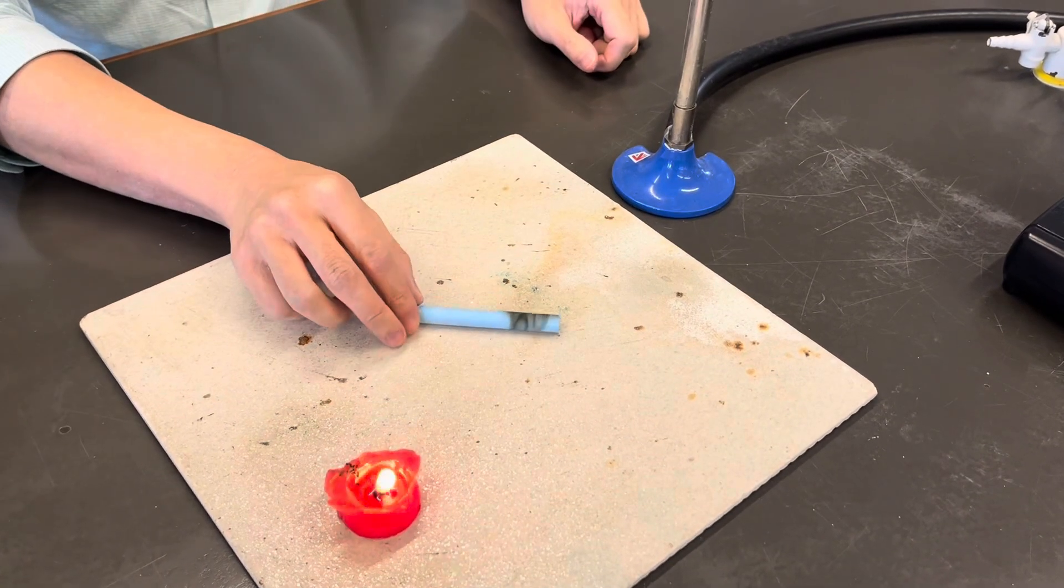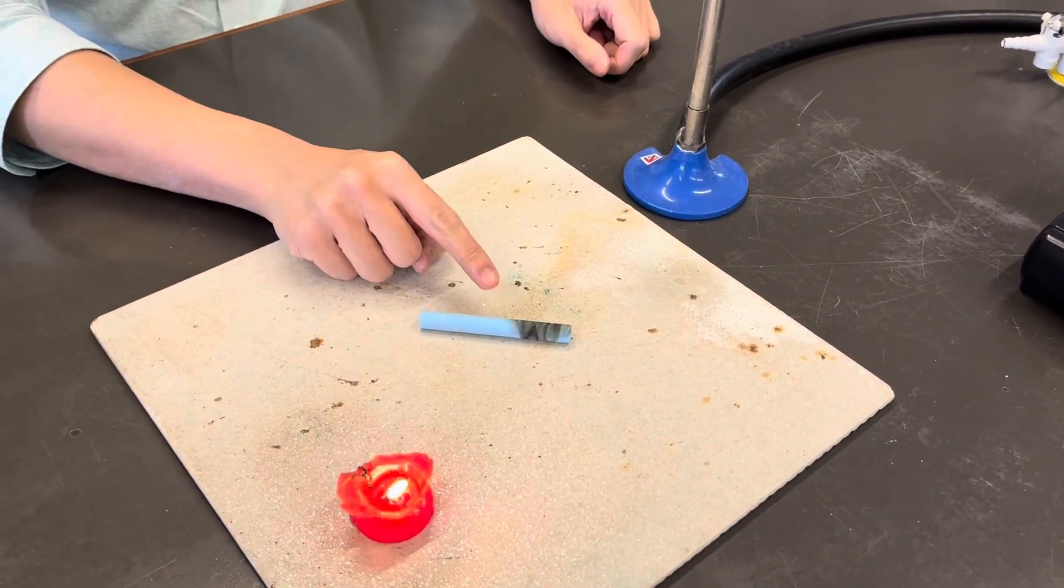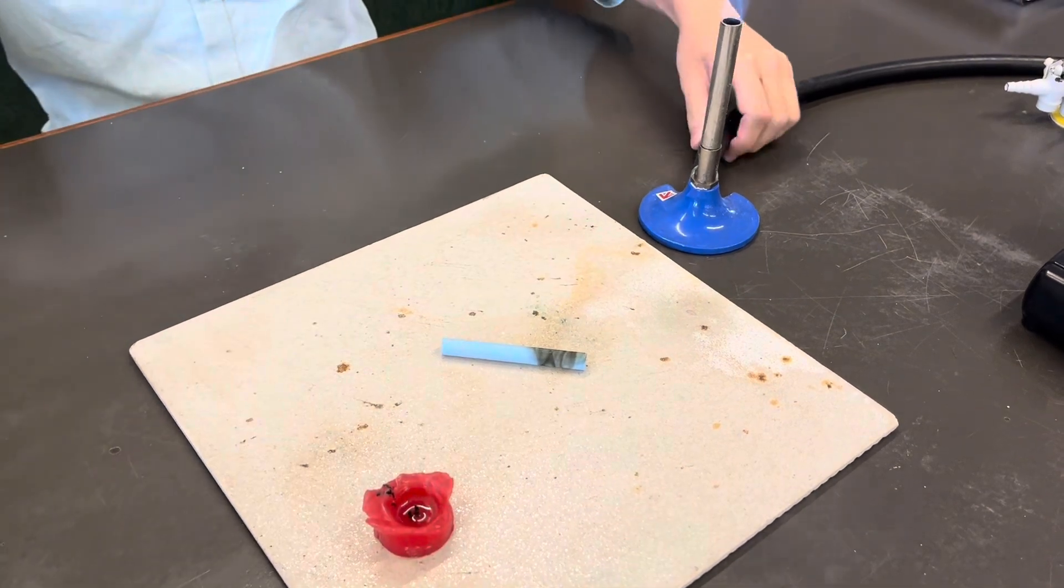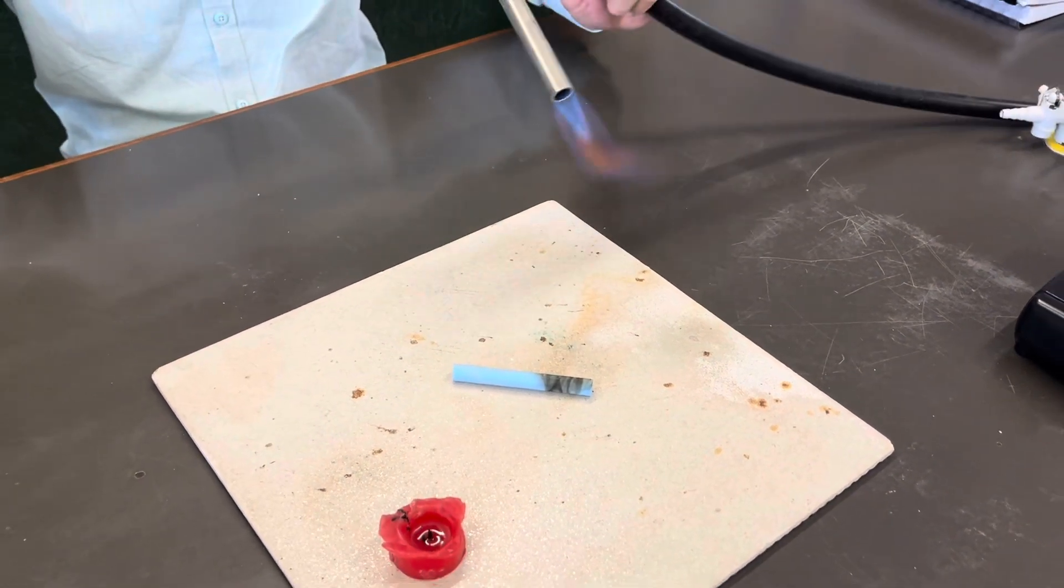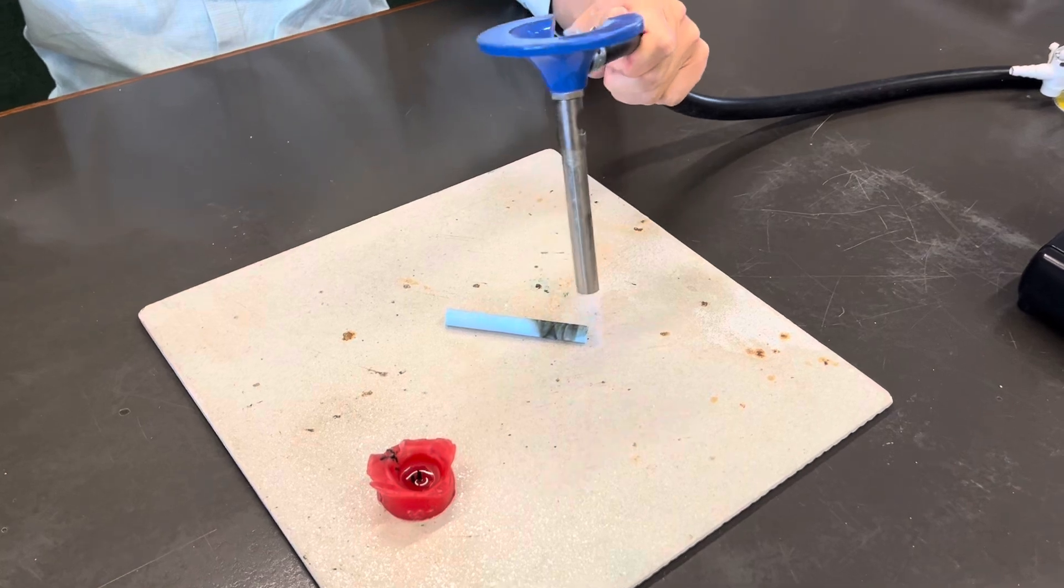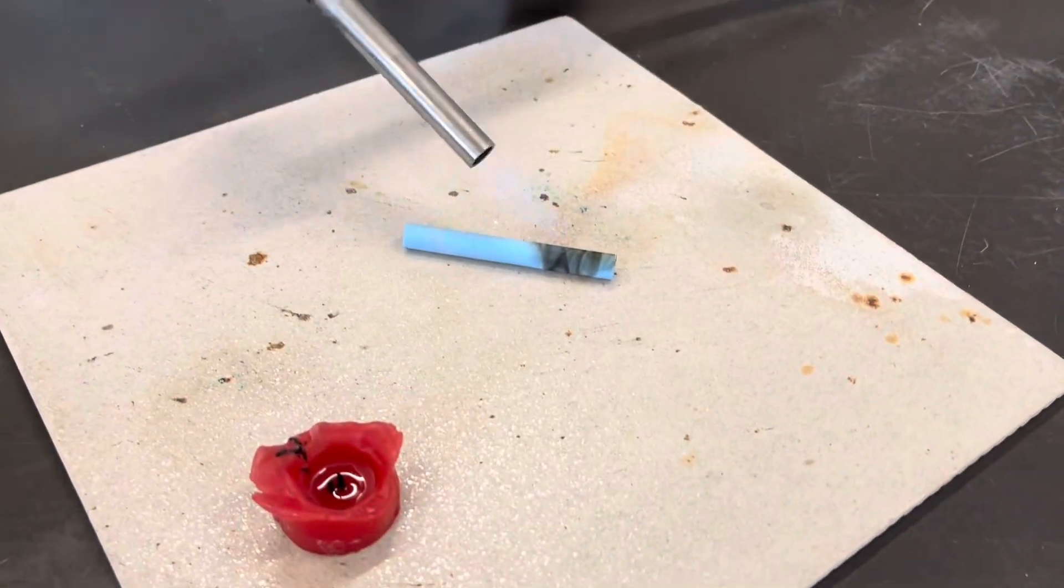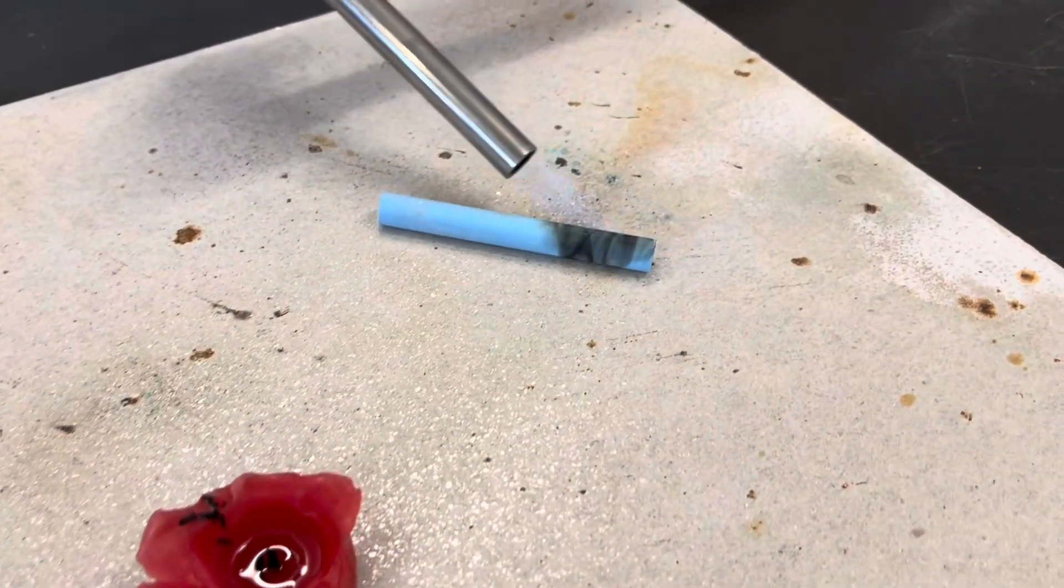So what I'm going to do right now is look at those black substances on here. I am going to use a Bunsen burner to heat it. Let's see.